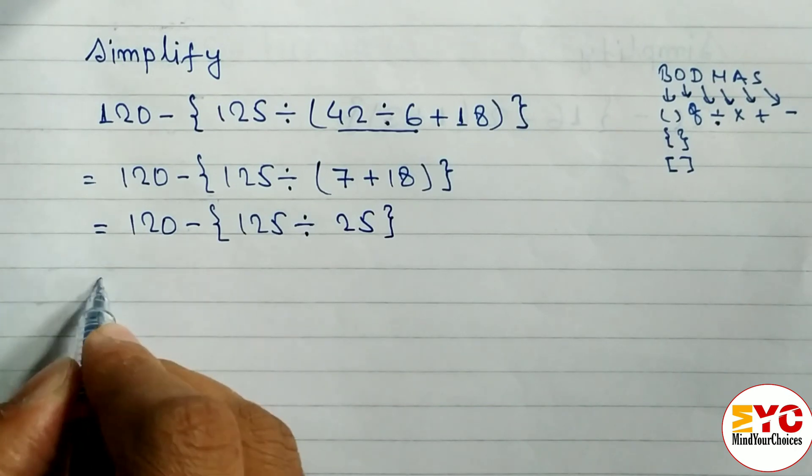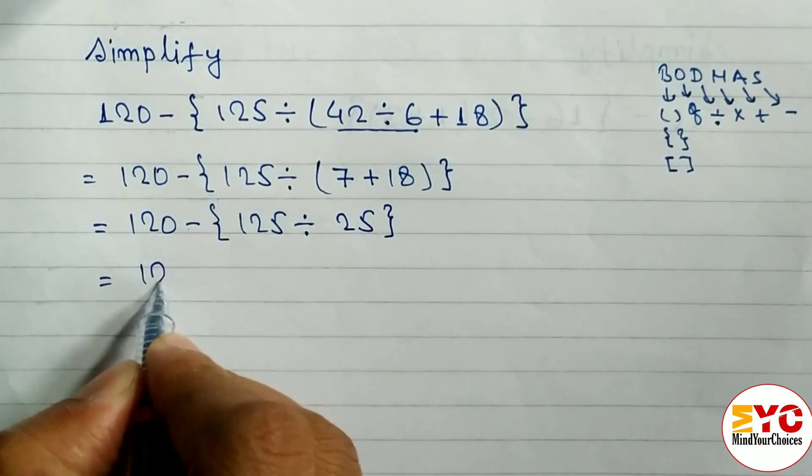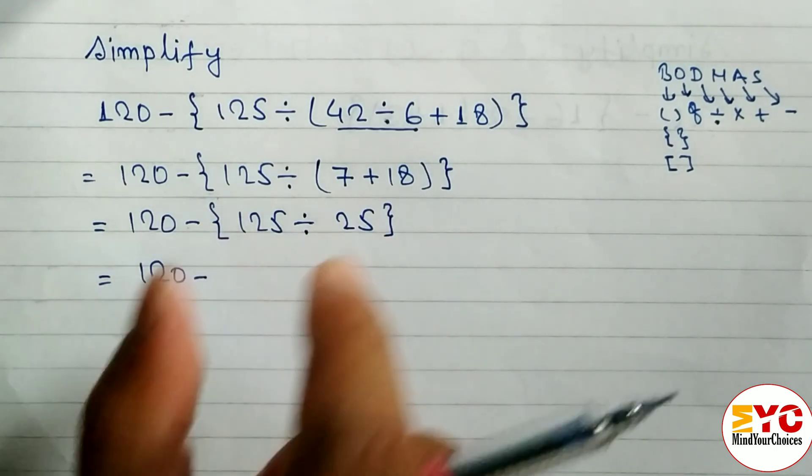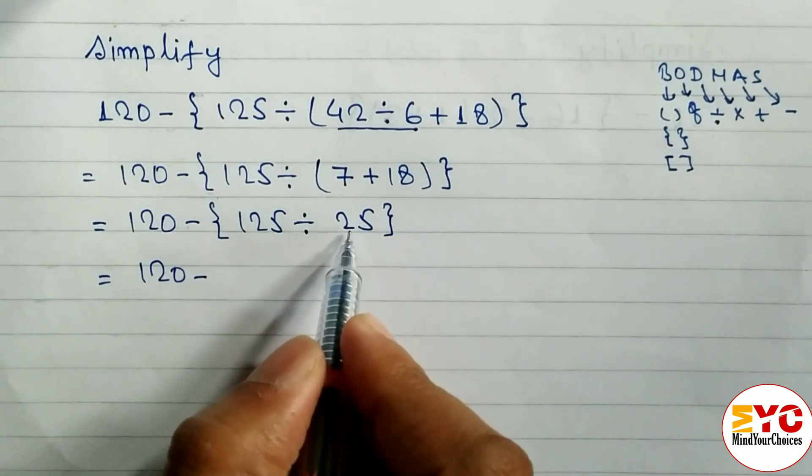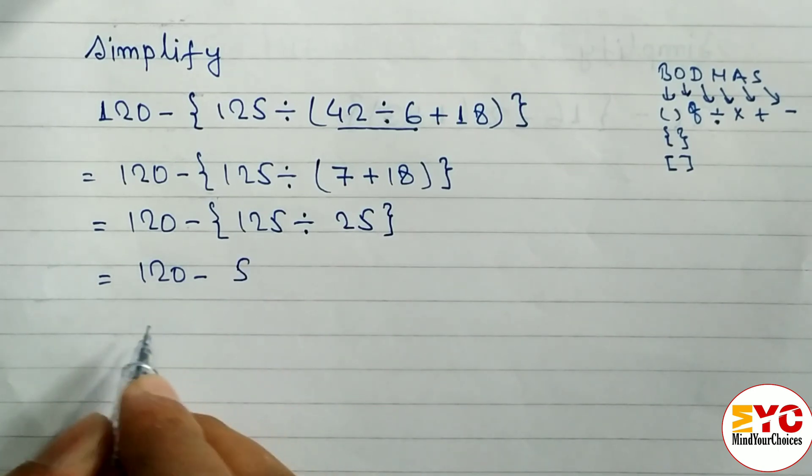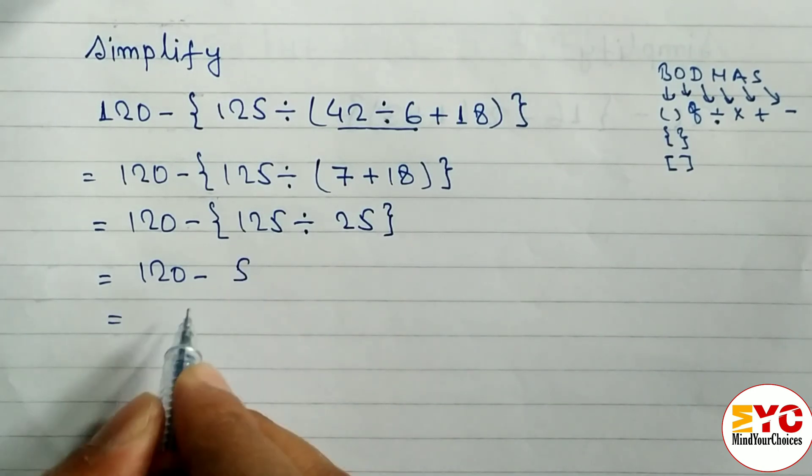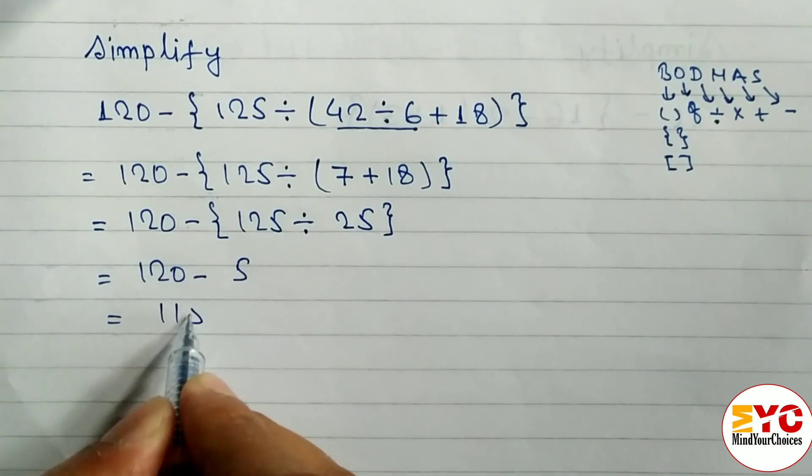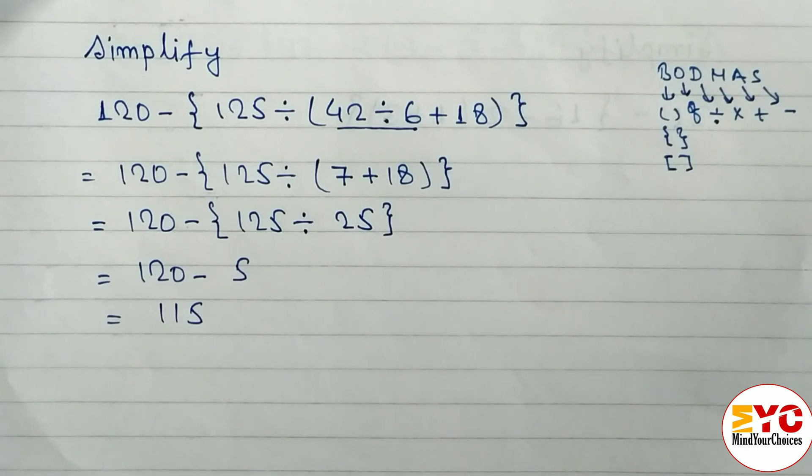After that, 120 minus - now we have to solve curly bracket. 125 divided by 25, we get here 5. So we have to write 5. And finally when you subtract, 120 minus 5, we get here 115.